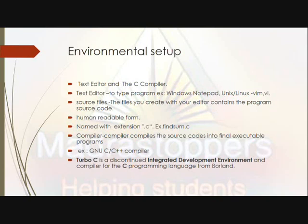For the environment setup, to run a C program you need a text editor — like Notepad — and a compiler. Save your file with the dot-c extension, for example, addition.c or difference.c. Use a relevant name with the dot-c extension. The source code in C is in human-readable format, and the compiler converts it to machine language that the computer can understand.